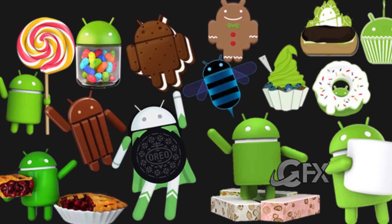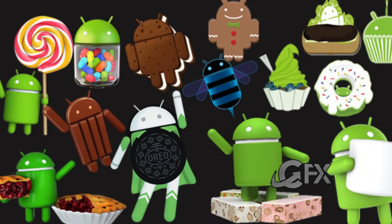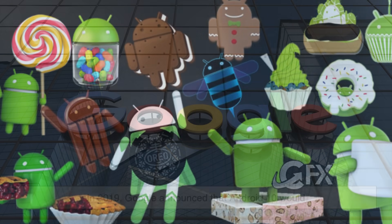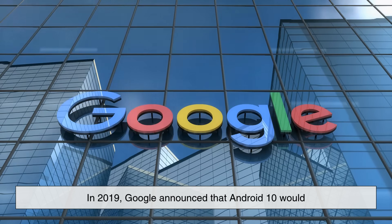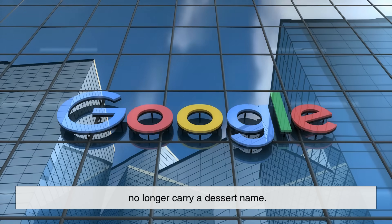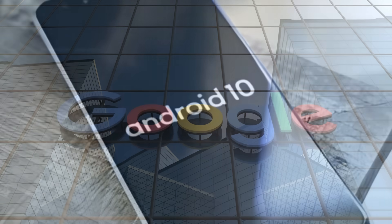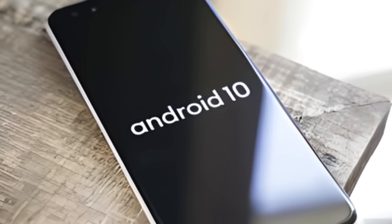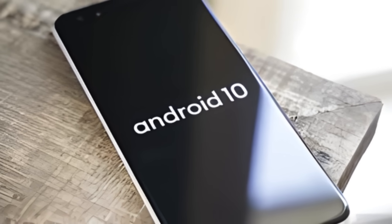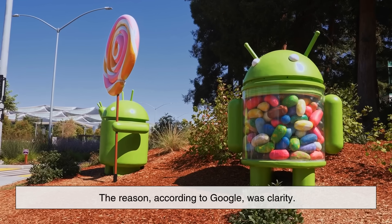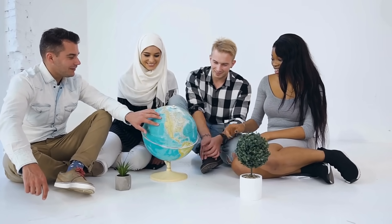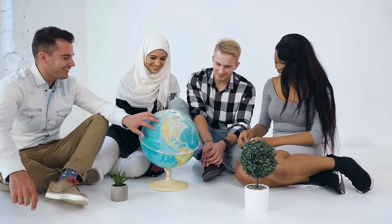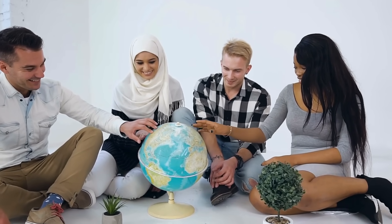However, this sweet naming tradition eventually came to an end. In 2019, Google announced that Android 10 would no longer carry a dessert name. Instead, they decided to switch to a more straightforward numbering system. The reason, according to Google, was clarity — they found that not all dessert names translated well across different languages and cultures.